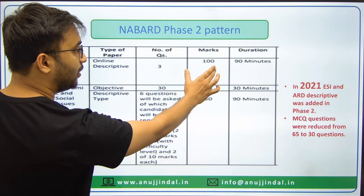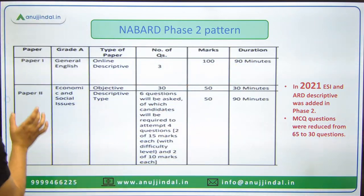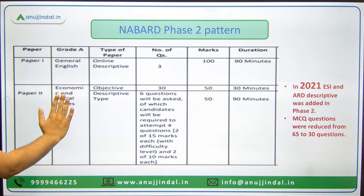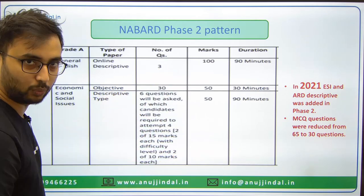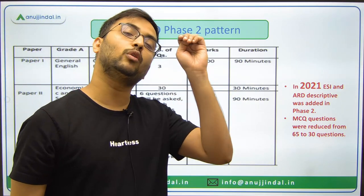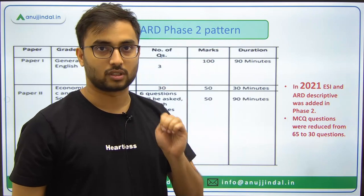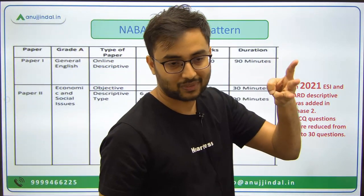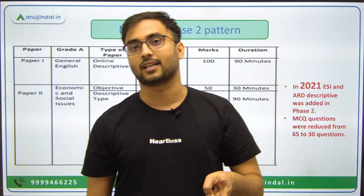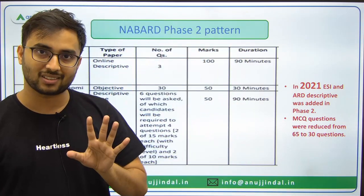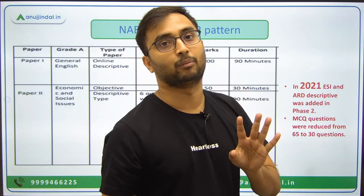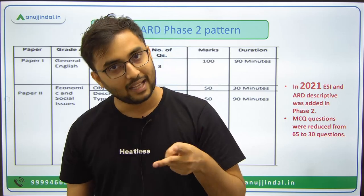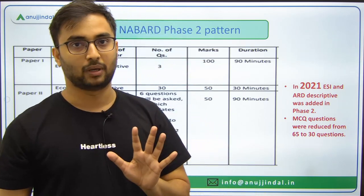So after 2021, the pattern is: Paper 1 is General English descriptive, with three questions — Essay, Precis, and Letter — for 100 marks and 90 minutes. Paper 2 is Economic and Social Issues (ESI) and Agriculture & Rural Development (ARD), both included together. Six descriptive questions are given; out of six you have to write any four. The first three are from ARD, next three from ESI.